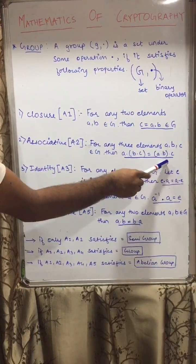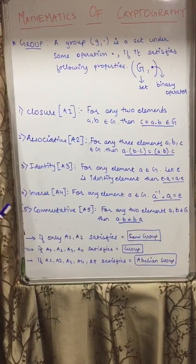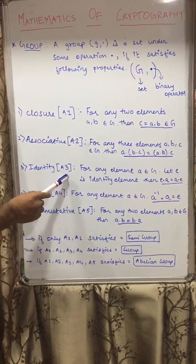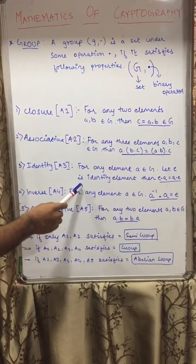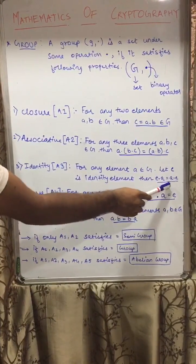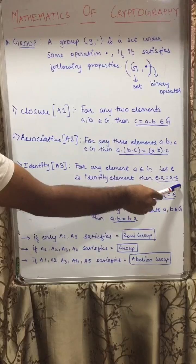Now the third property is identity property A3. For any element a belongs to G, let e be its identity element, then e · a is always equal to a · e.